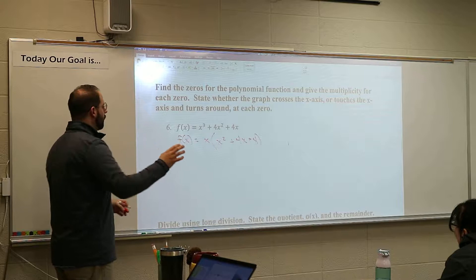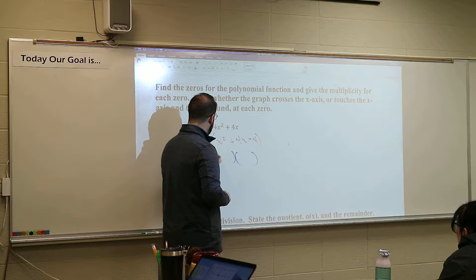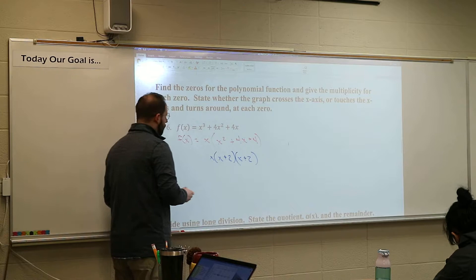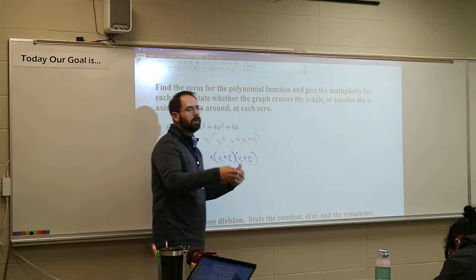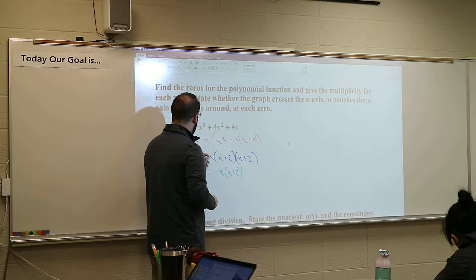Now, the parenthesis — this trinomial can go further, one more step. It's two parentheses, and I believe they're the same. It's x plus 2 and x plus 2. So that means when we write that down, that is x times (x plus 2) squared. There are actually two of those parentheses. So this is my function — that's the function completely factored.